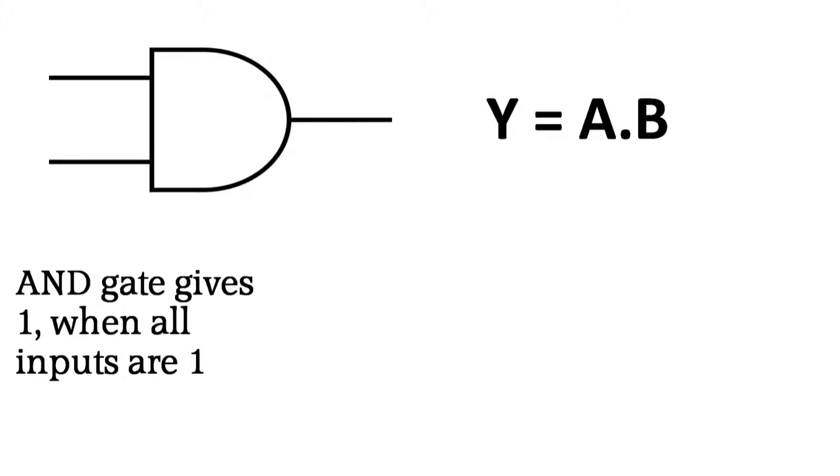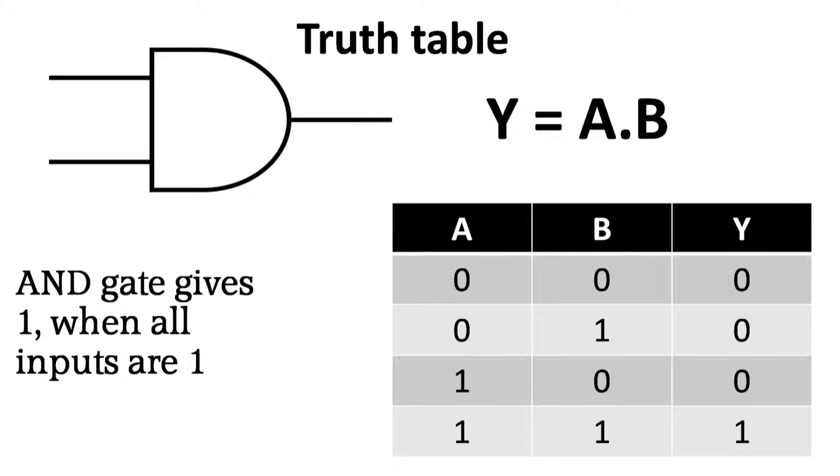AND gate basically does the operation AND. Output Y is A and B. In binary system, result of AND operation is one only when all the values are one. If one of the values is zero, the result of AND operation would be zero. We can construct a kind of table which tells us the input combination for which the circuit gives one as output - we call it the truth table. So if we make a truth table of AND gate it would look like this: A and B both zero, so output would be zero; A zero and B one, so output would be zero; A one and B zero, so output would be zero; all inputs one, so output would be one.